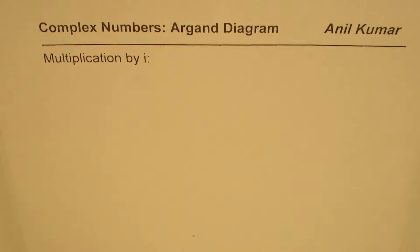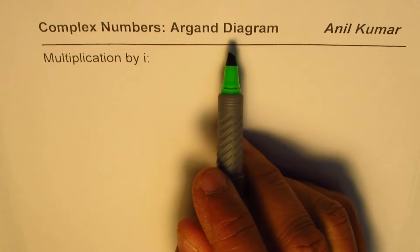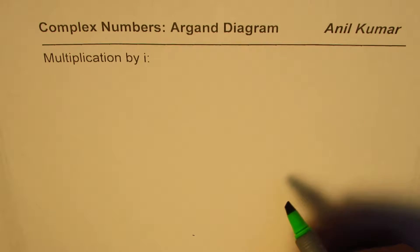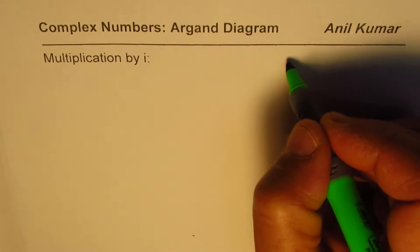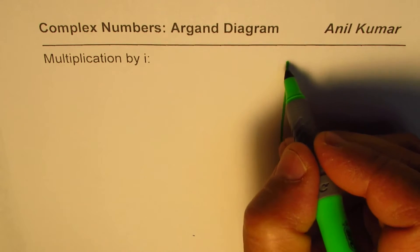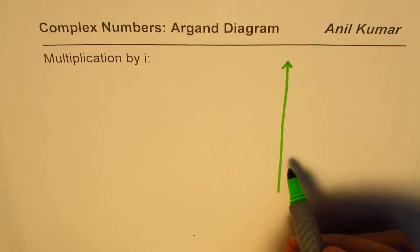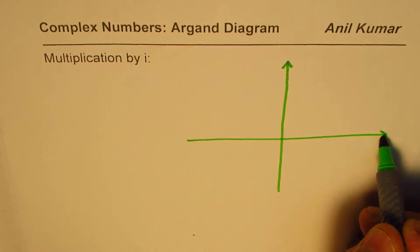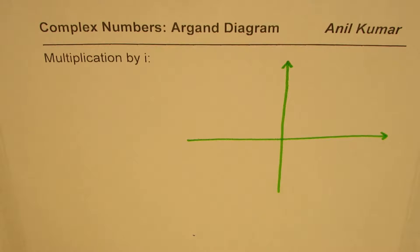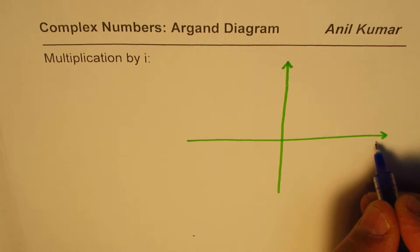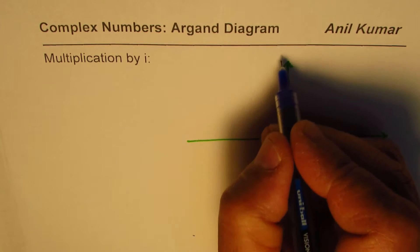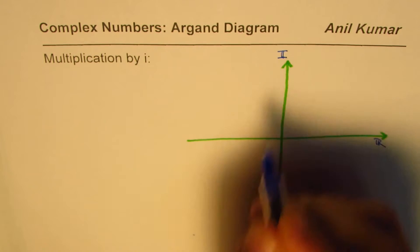I'm Anil Kumar and in this video we will learn multiplication by i and its effect on Argand diagram. When we are working with complex numbers, we represent the imaginary part along the vertical y-axis and the real part along the horizontal x-axis. So here we have the real part, let me write this as R and imaginary part as I.